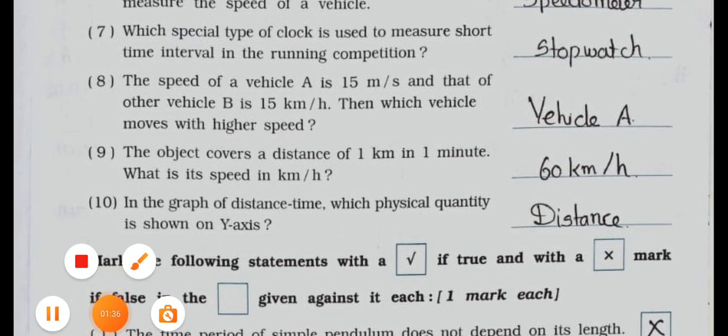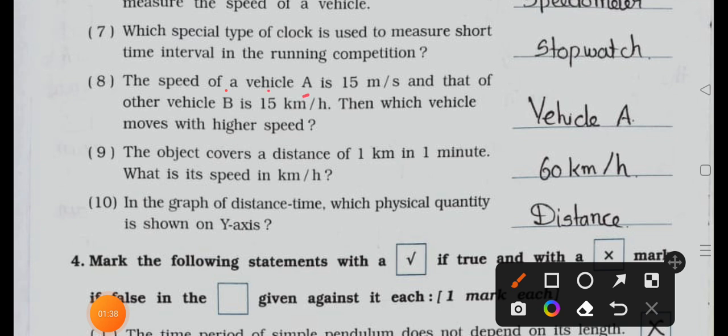Now see number eight: the speed of vehicle A is 15 meter per second and that of other vehicle B is 15 kilometer per hour. Then which vehicle moves with higher speed? Answer is vehicle A. It's in meter and B is in kilometer, so vehicle A.